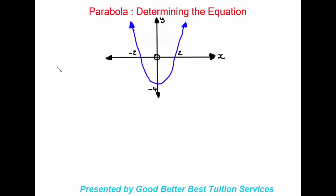Good day and thank you for joining us. Last time we looked at plotting parabolas. In today's lesson we'll be looking at determining the equation of the parabola. On the slide we can see a nicely sketched parabola. The turning point is at zero and negative four on the graph, and we have x-intercepts given to us of negative two and positive two.